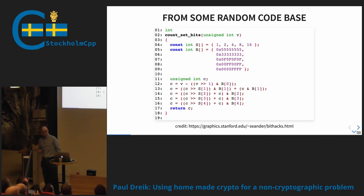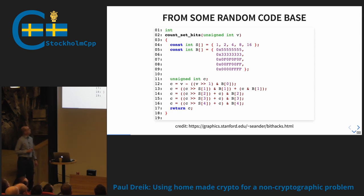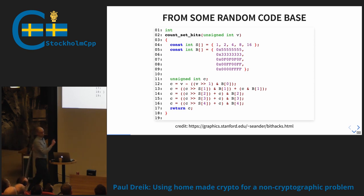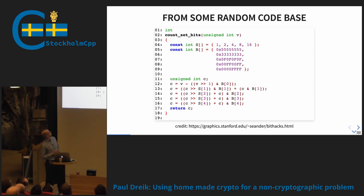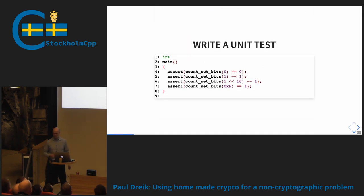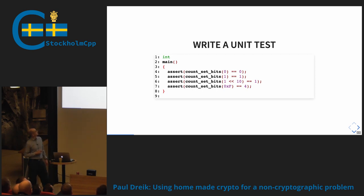Imagine you're coding in some codebase and you encounter this function. Maybe someone recognizes it — it's from the Stanford page on the bit twiddling hacks. It looks fast, and it counts the number of set bits, the number of one bits in the input. As good coders, as Jonas said, we should have tests. So we're writing a unit test. Now we have unit tests.